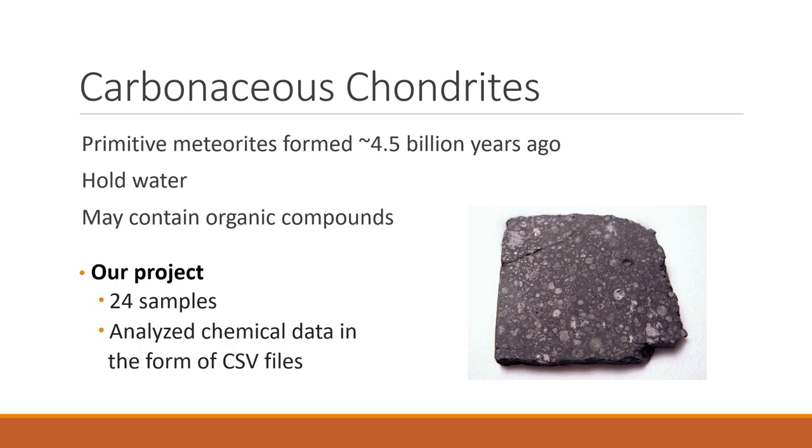We analyzed chemical data from 24 samples, which were taken from eight carbonaceous meteorites, five Martian meteorites, and two synthetic analogs, in order to find patterns among carbonaceous chondrites. In particular, we looked at the mass-to-charge ratios, theoretical masses, and abundance of various elements for each sample.